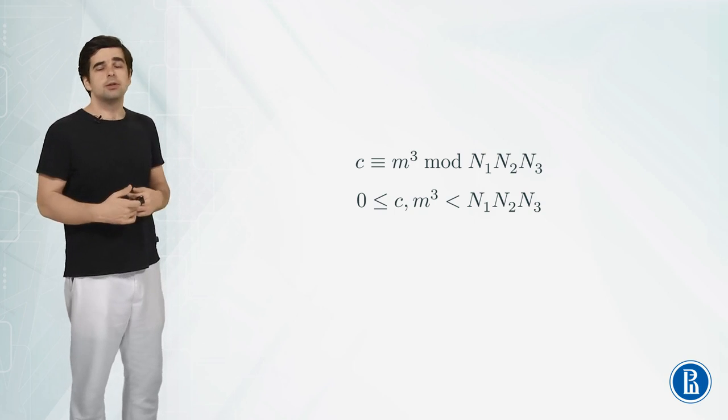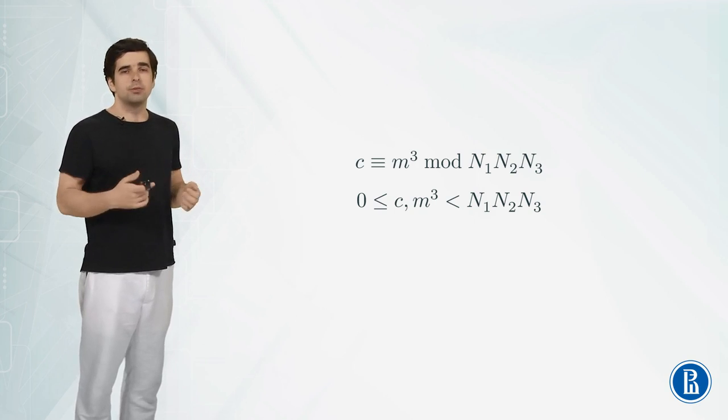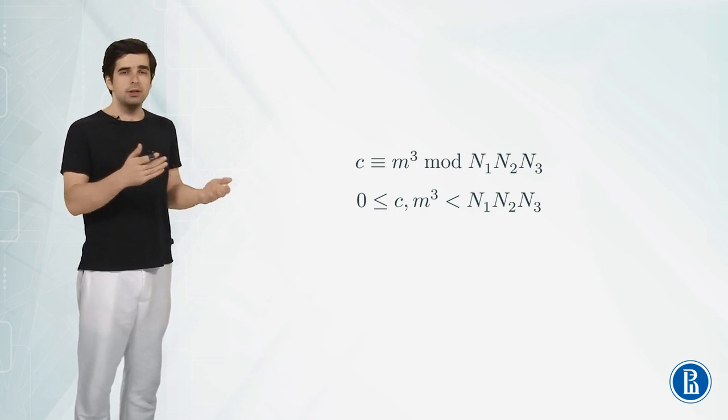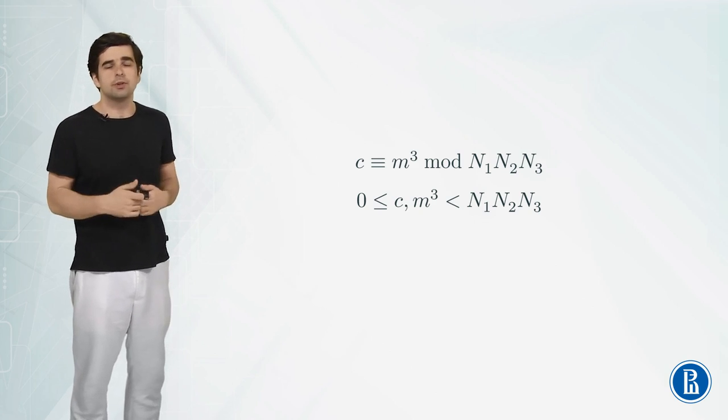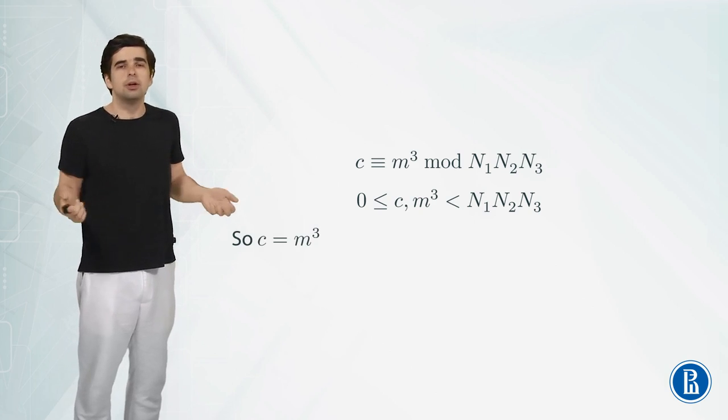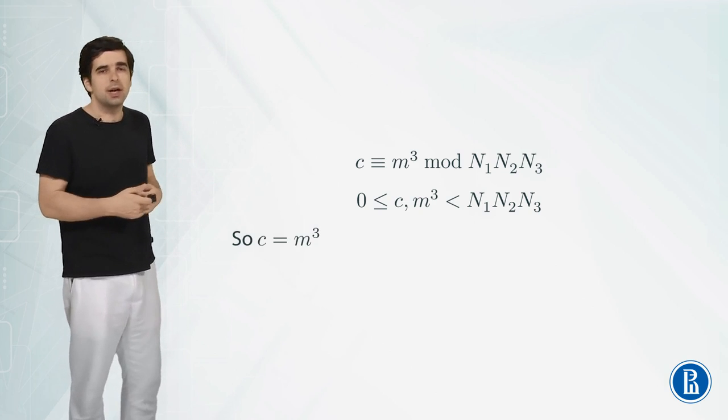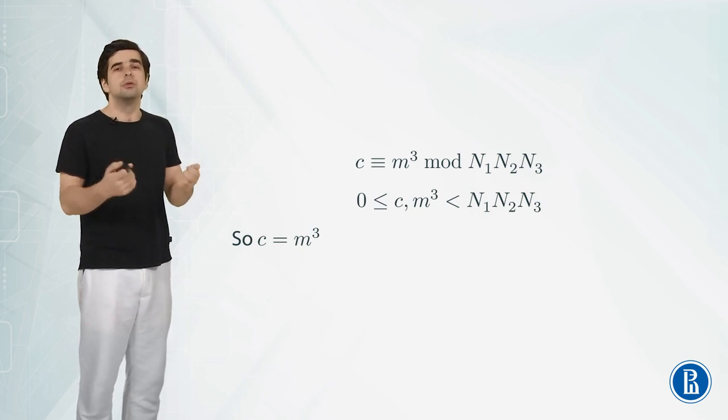And as m is less than each of these moduli by multiplying these inequalities we get that m³ is less than their product. So these two numbers have the same remainders modulo N₁N₂N₃ and they are between 0 and N₁N₂N₃ so they are both remainders modulo of this product. And it means that these numbers are just equal because there are no two different remainders which are equal. So c is equal to m³ in the end.